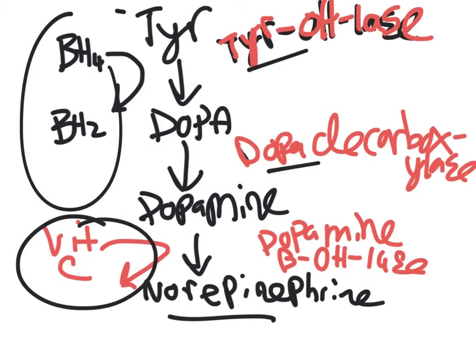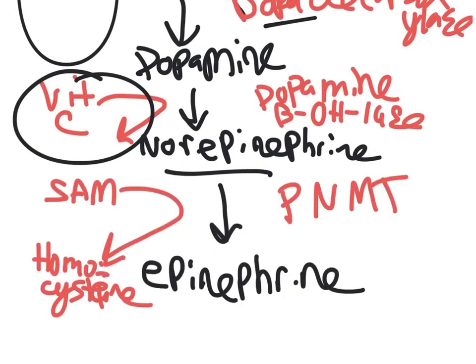Vitamin C is important because the only other place you'll really see this in biochemistry is in collagen production. From norepinephrine, you produce epinephrine, and that requires PNMT — phenylethanolamine N-methyltransferase, sometimes called norepinephrine N-methyltransferase. The important thing about PNMT is that it is a cortisol-dependent enzyme, meaning whenever cortisol is present, the expression of this enzyme gets upregulated. That is why it's so important for the adrenal medulla to be in close proximity to the adrenal cortex. Biochemically, this process requires S-adenosylmethionine, which donates a methyl group and is converted to homocysteine, making epinephrine.